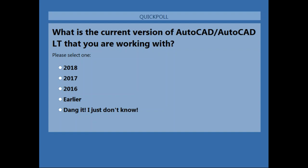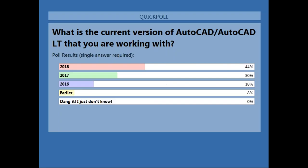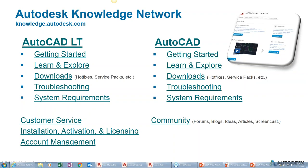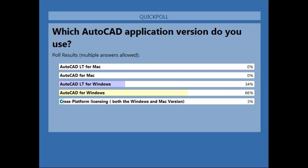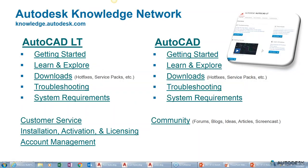Our next poll: what is the current version of AutoCAD or LT that you're working with? It looks like about 40% are on 2018, a lot of people still using 2017, and not too many earlier than 2016. Good to see everyone moving up to the latest releases. And our last poll: what AutoCAD application version are you using — LT or Windows? It looks like mostly Windows users, a few LT. About 66% AutoCAD for Windows, 34% LT, and no Mac users today.